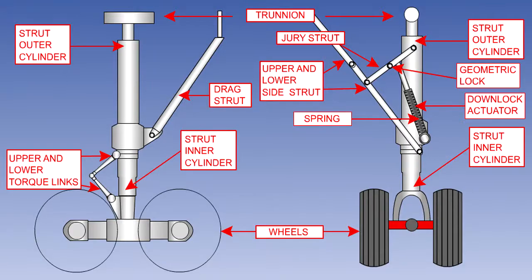You should now be able to identify the various components of the main landing gear, as well as understand their purpose. You should know that the torque links take the main landing gear torsion loads during ground manoeuvring, that some larger aircraft have steerable body gear, and that the gear is normally locked down by a geometric lock produced by the over-centre movement of the jury strut.